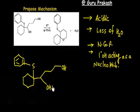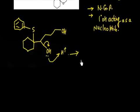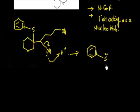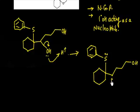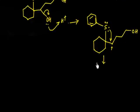The first step: H+ attacks and we lose H₂O in the same step. So after losing H₂O, I have a benzene ring, a sulfur with a lone pair, connected to a 6-membered ring (cyclohexane), and a carbocation. Now sulfur has two lone pairs, and this lone pair attacks the carbocation to stabilize it — this is neighboring group participation.